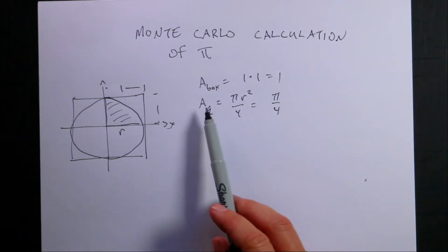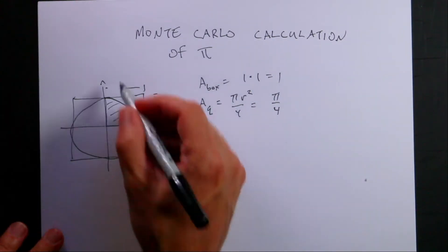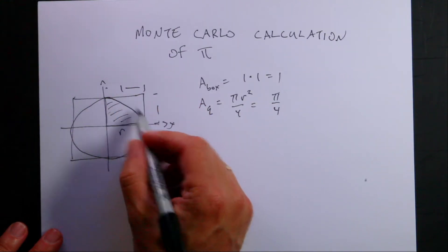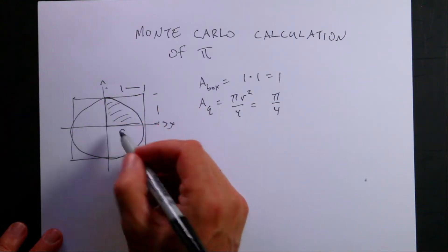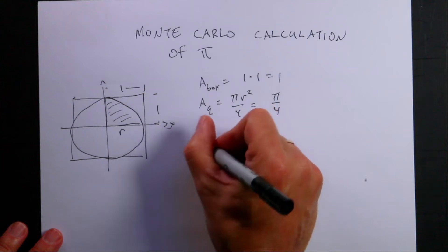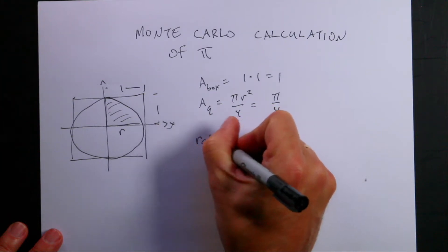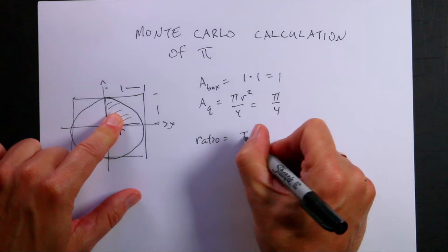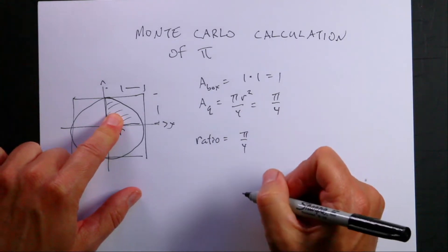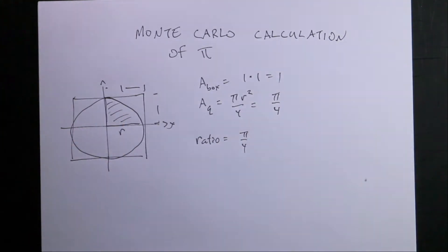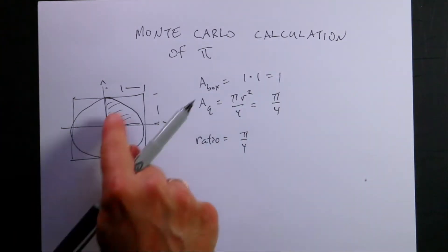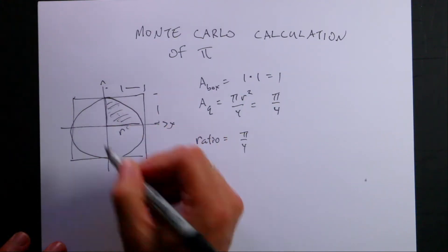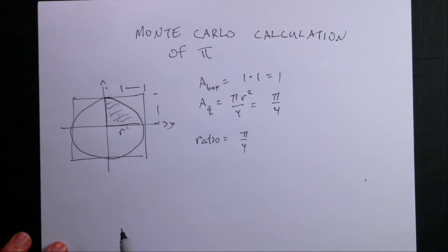So if I take the ratio of the area of the quarter circle to the total area, the ratio is going to be pi over 4 divided by 1, which is pi over 4. So if I find the ratio of dots inside the circle to the square, I can find the value of pi.